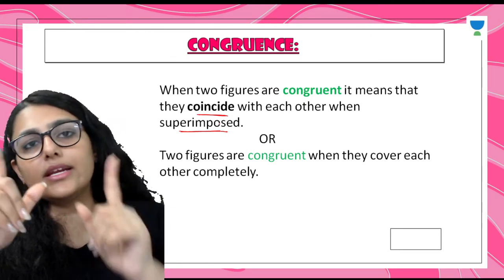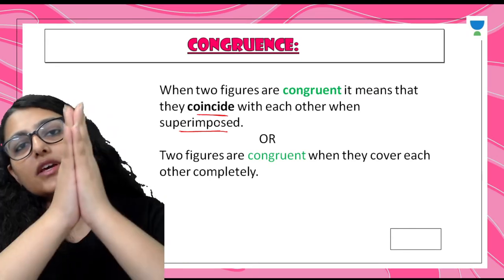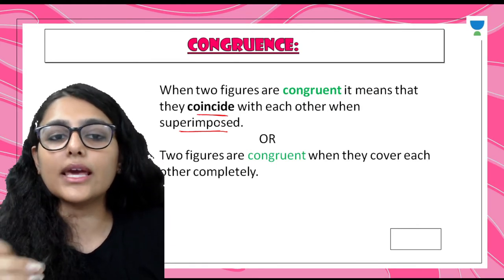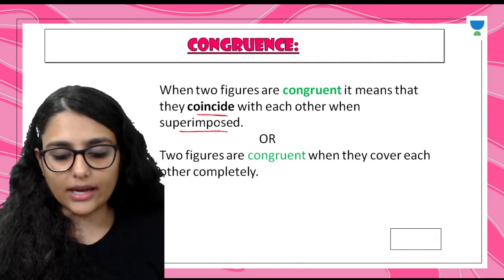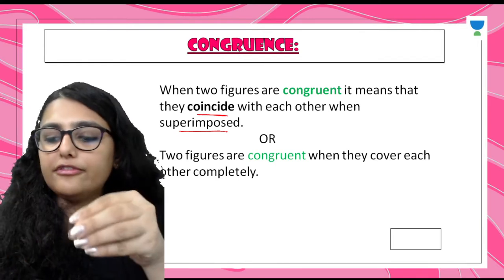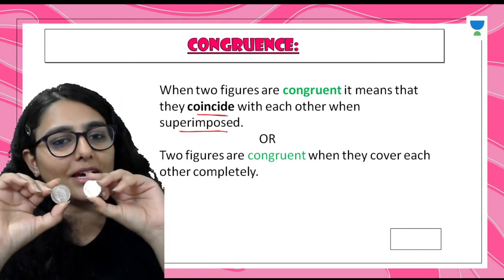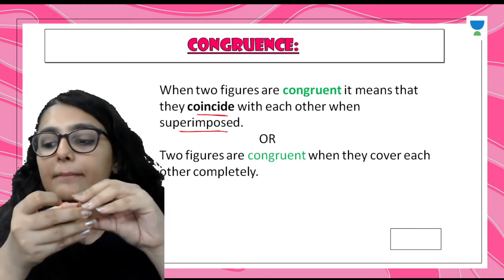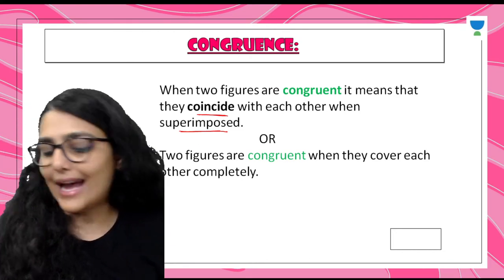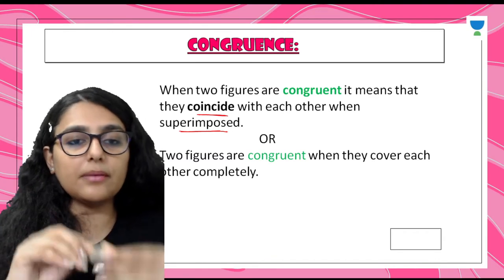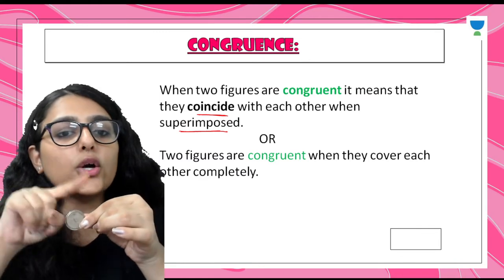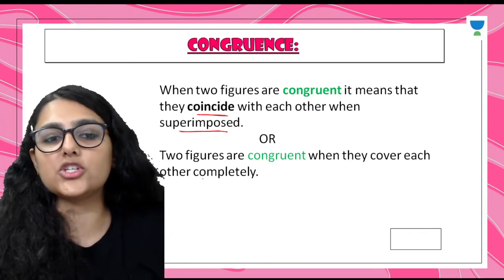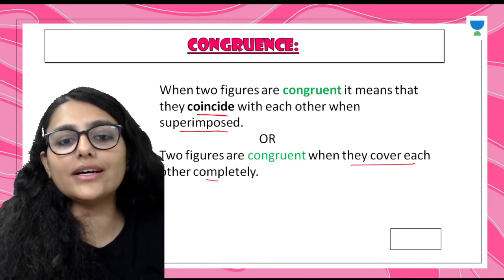We do this overlap when I keep the index finger with the index finger, middle finger with the middle one, ring finger and baby fingers together. If the corresponding parts are not kept on each other, they are not coinciding. For example, two new 20-rupee coins kept over each other will overlap and coincide. But a 20-rupee coin placed over a 1-rupee or 5-rupee coin will not coincide - some corners are left over, so they are not congruent.